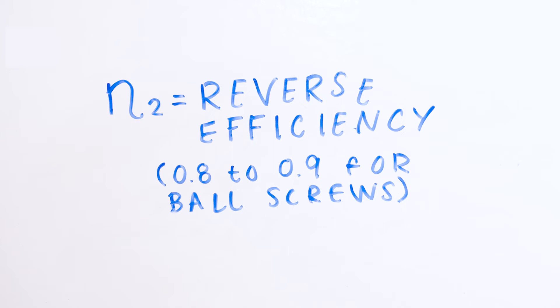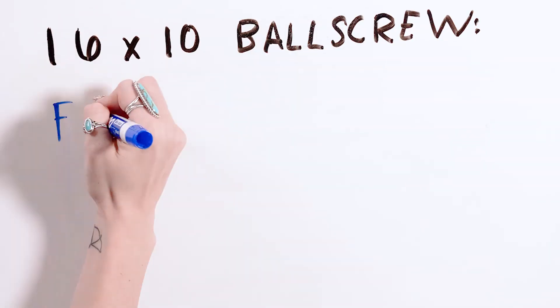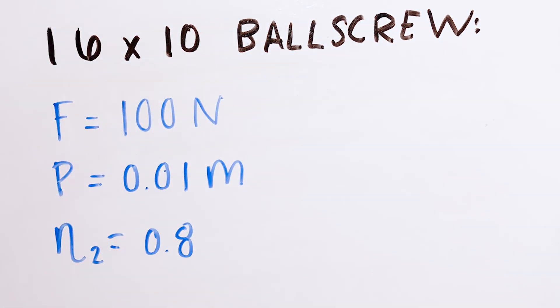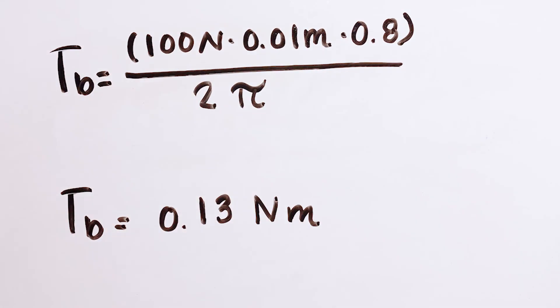Let's look at an example using a 16 by 10 ball screw assembly with a fixed floating bearing arrangement, a reverse efficiency of 0.8, and an axial load of 100 newtons. The backdriving torque is calculated to be 0.13 newton meters.